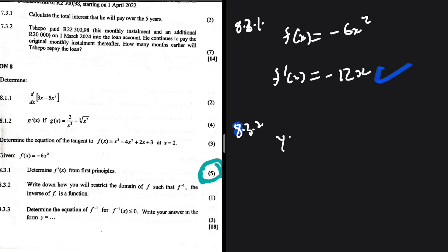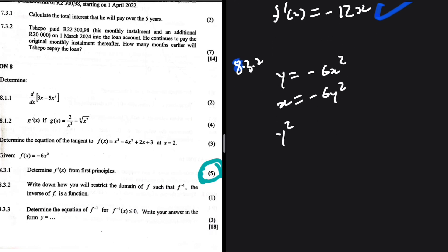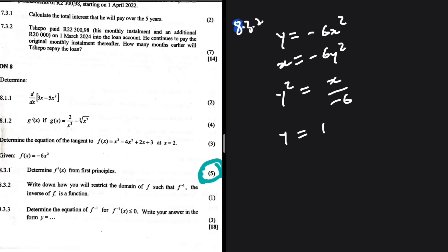So y is equal to minus 6x squared. So the inverse is x is equal to minus 6y squared. So we end up with y squared being equal to x divided by minus 6. So y is equal to plus or minus x divided by minus 6. So you can see that we need values of x to be negative here. We need values of x to be negative. Because when values of x are negative, it ensures that the square root is defined.